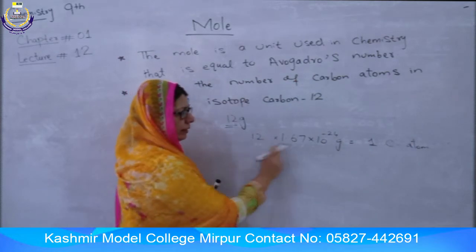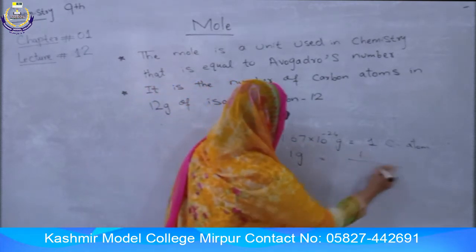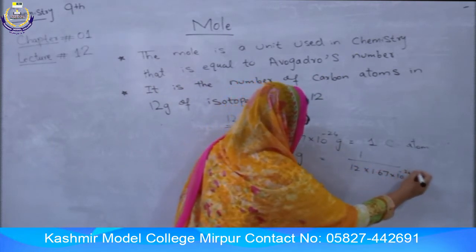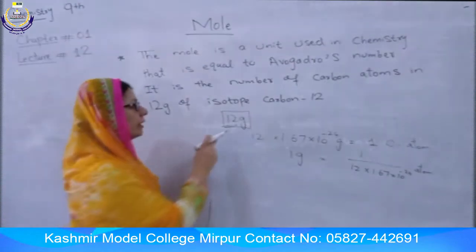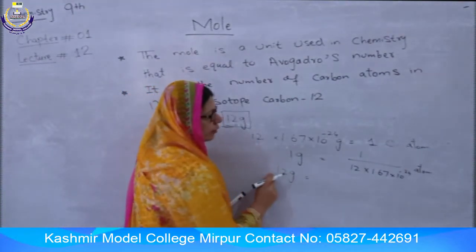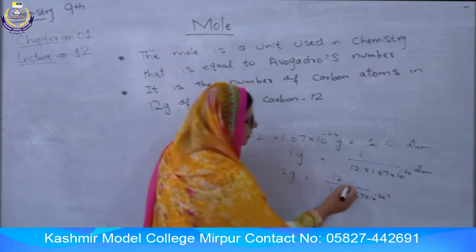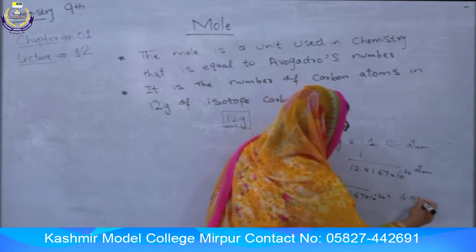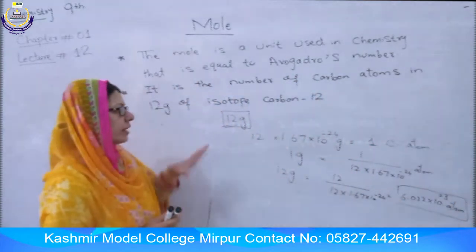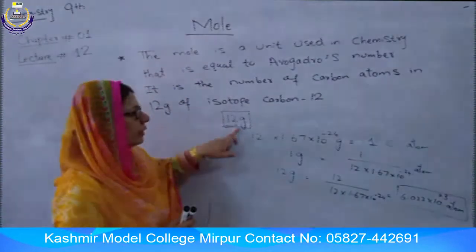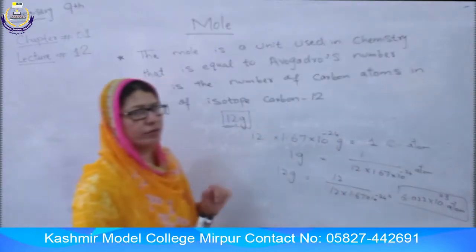So if one carbon atom has that mass, then 12 grams of carbon contains 12 ÷ (12 × 1.67 × 10⁻²⁴) = 6.022 × 10²³ atoms. This means for any atom — carbon, hydrogen, or oxygen — when their atomic masses are expressed in grams, the number of atoms always equals Avogadro's number.